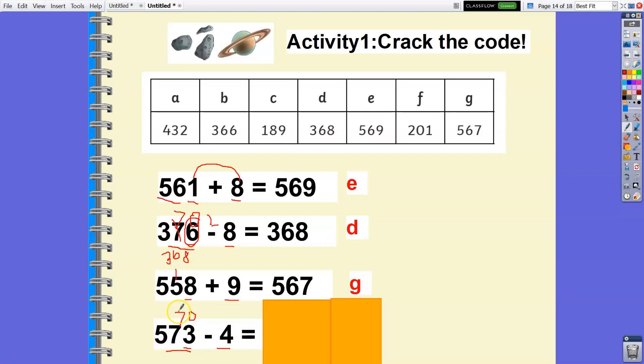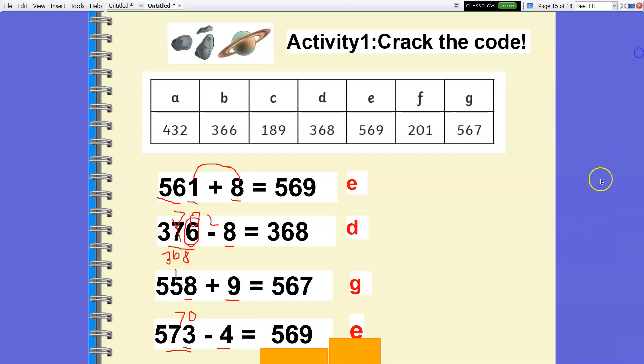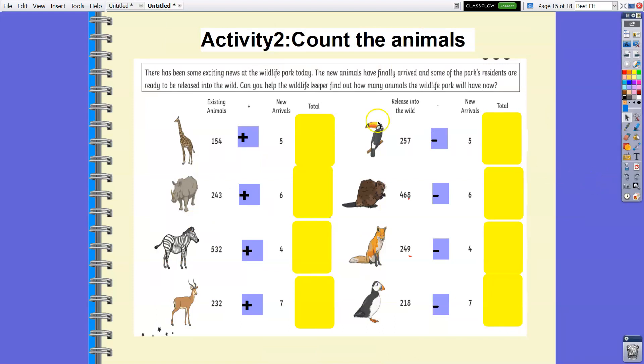Now let's try this. These are the existing animals in the zoo, and we have to add new arrivals. These are the existing animals in the zoo, and we have to subtract new arrivals. This is for three minutes only. Pause the video and write your answers now.